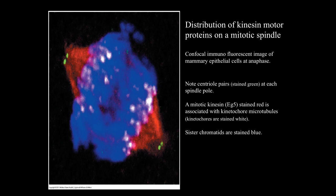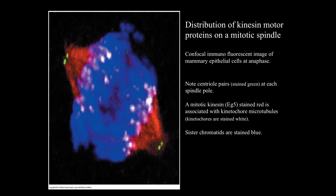The antibody to EG5 was labeled with rhodamine, fluorescing red. The kinetochores appear white because kinetochore proteins were stained with an antibody labeled with a white fluorescent probe. The sister chromatids appear blue due to autofluorescence of the DNA.